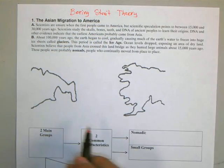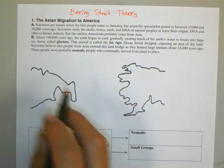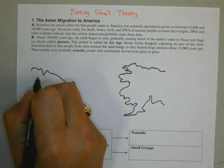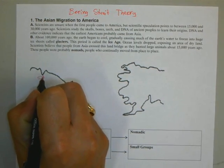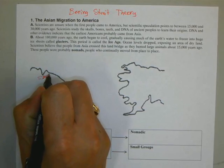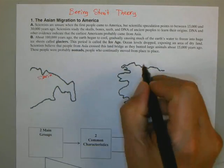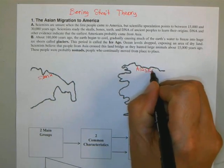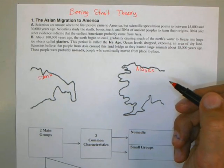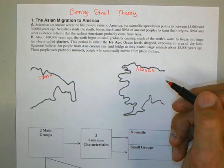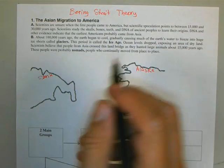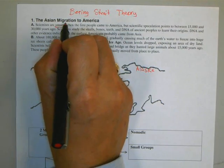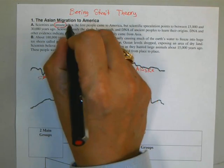Let's go ahead and start with the map right here. If you notice this area right here, this is known as Siberia. And this is what today we know as Alaska. The Bering Strait Theory — notice this word: 'unsure.' Scientists are unsure.